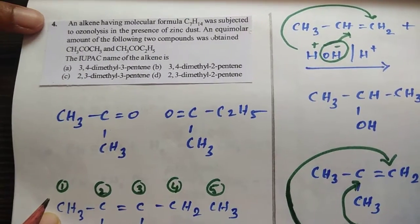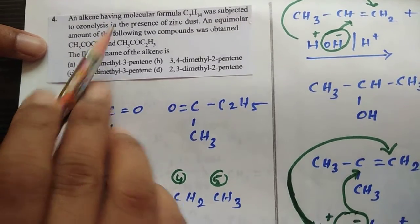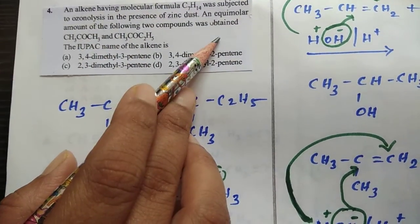The next question: an alkene having molecular formula C7H14 was subjected to ozonolysis in the presence of zinc dust. An equimolar amount of the following two compounds was obtained.